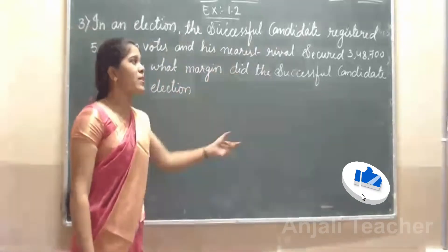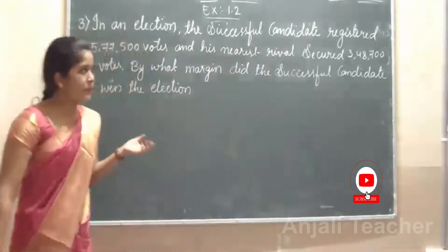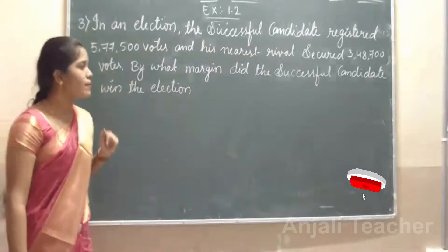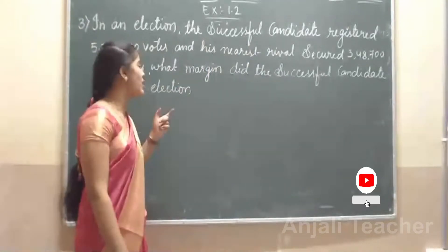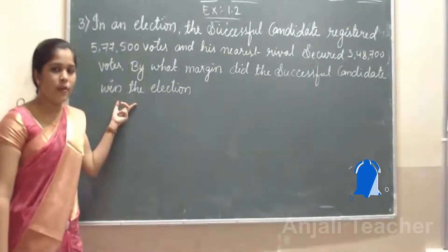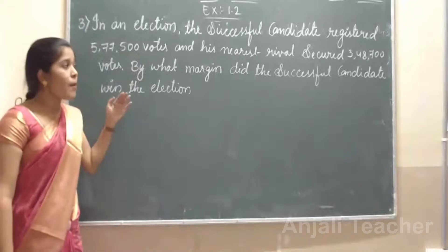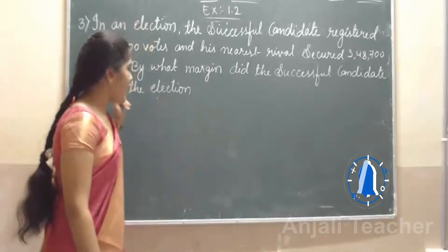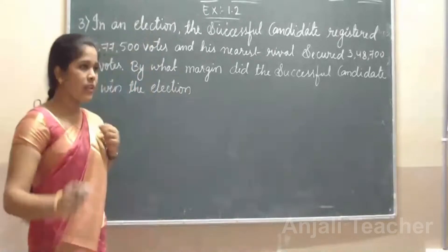The question says: in an election the successful candidate registered 5,77,500 votes and the nearest rival — means the opposite party candidate — secured 3,38,700 votes. By what margin did the successful candidate win the election? By what margin means by how many votes did the successful candidate win.